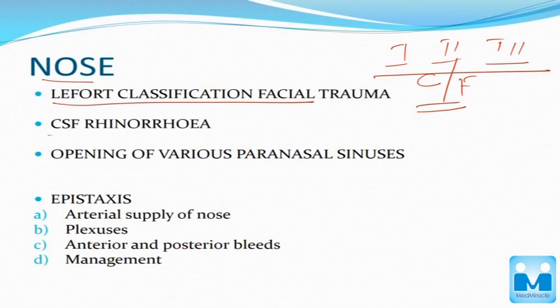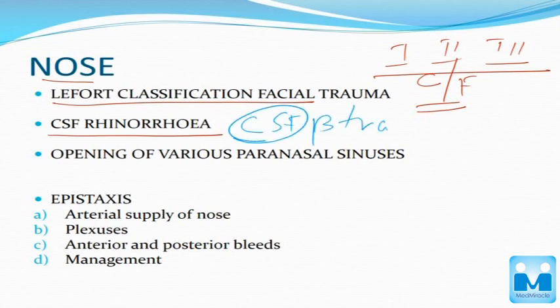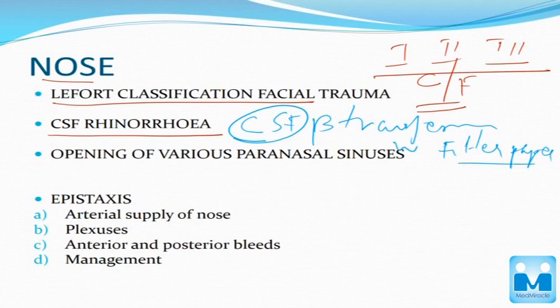In the CSF rhinorrhea topic, you have to know how to differentiate CSF — whether using beta-transferrin or the filter paper test. You have to know how to identify if it is CSF, and the management part is mainly conservative.